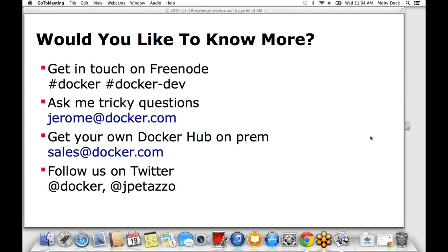The last question: how should one rotate logs with Docker? You still need collaboration from the application — it should be aware that logs need to be rotated. The way I'd do it: ensure the application reopens the log file periodically, then do the rotation from the log management container. The log management container moves log files around and waits until the application reopens the log file. Thanks a lot for attending, and don't hesitate to contact us about Docker Hub or other inquiries.